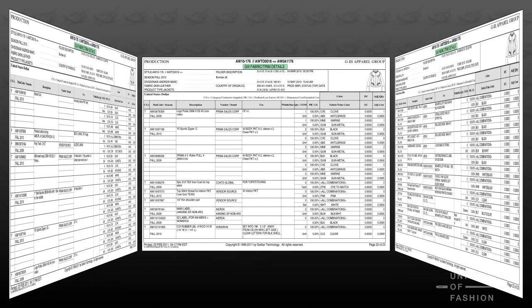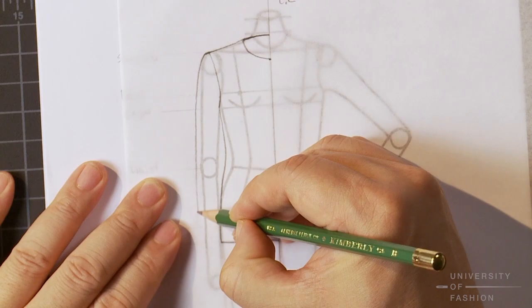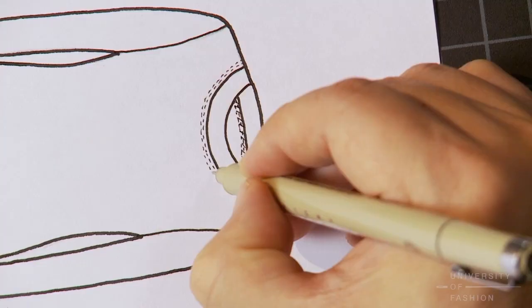This lesson will teach you how to draw a t-shirt flat and utilize the template created in our Female Flat Croquis Lesson. Flat sketches are used when you want designs to have more detail and understand proportion. Expand your knowledge of flat sketching by viewing our Pants Flat Lesson, our Skirt Flat Lesson, and our Jacket Flat Lesson.